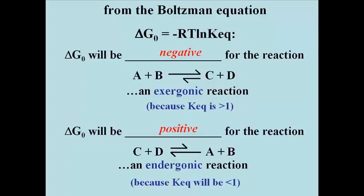The log or natural log of a number less than 1 will be negative, so that minus R times T times the natural log of K Eq, or the equilibrium constant, a negative number, will be positive.